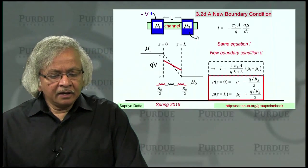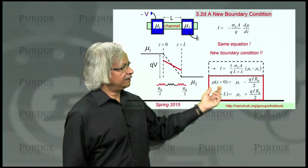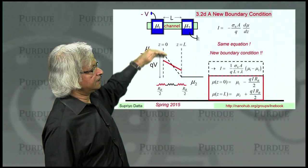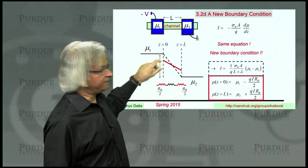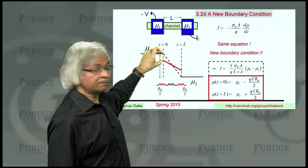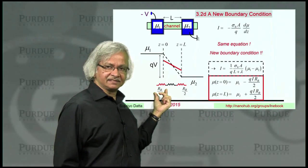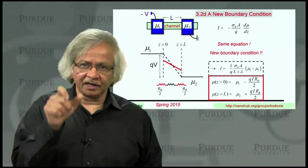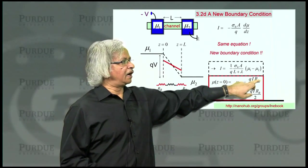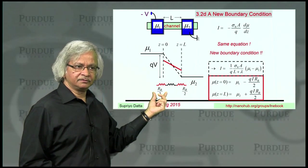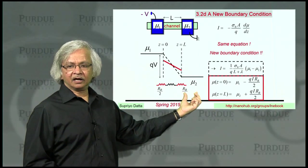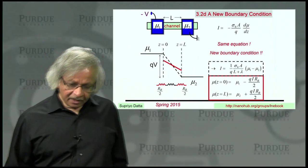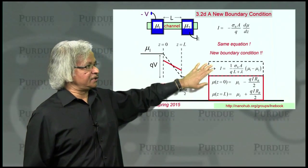Now, how do you interpret this boundary condition? Well, what you're saying is that the electrochemical potential at this end is not mu 1, but a little less by the amount proportional to the current. What that means is there is a potential drop here. And that is proportional to the current. And that, of course, corresponds to having a resistance there. Because in any series circuit of resistors, when a current flows, the drop is current times the resistance. So if you have a drop of I times R_b over 2, it means there's a resistance R_b over 2. Similarly, there's a drop here. And that's another R_b over 2. See? So that's how you could pictorially represent this boundary condition.